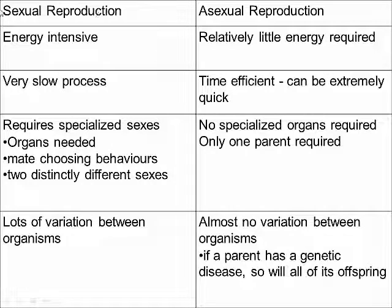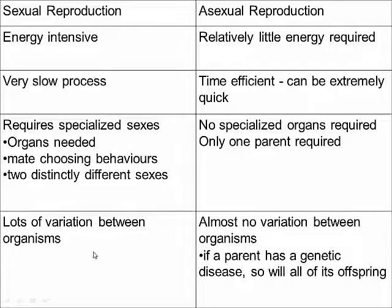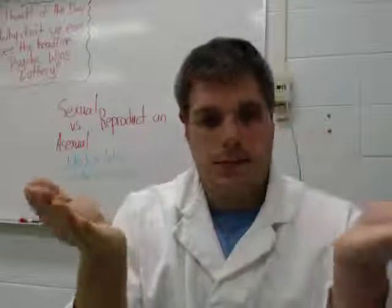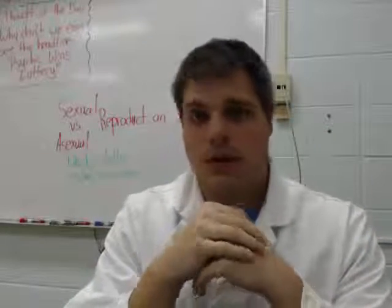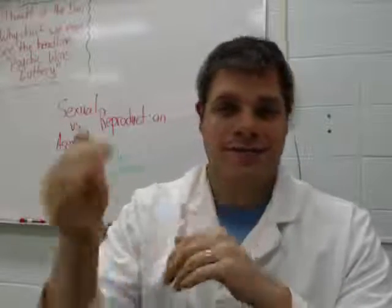Sexual reproduction versus asexual reproduction — they both have their advantages. Asexual reproduction's key advantage is that organisms can reproduce really quickly for low amounts of energy. The key advantage of sexual reproduction is that it creates lots of variety. Advantages and disadvantages for both of them in different circumstances. That's all for today. Thanks for watching. Till next time.